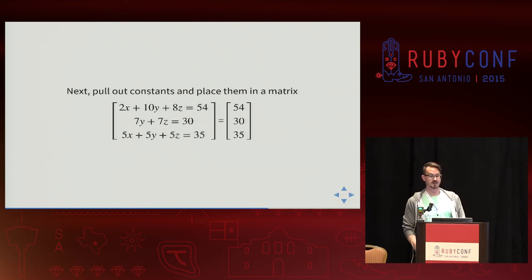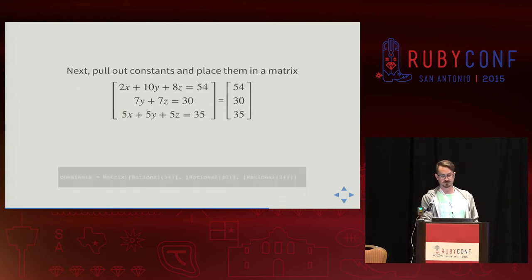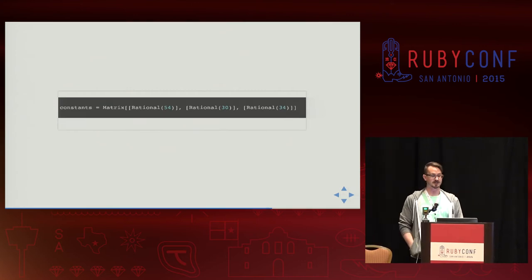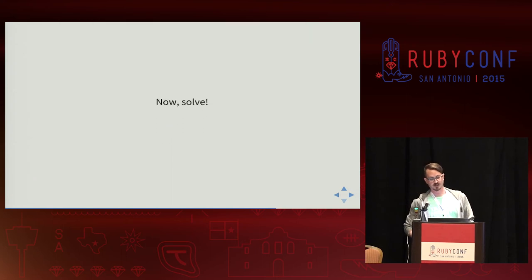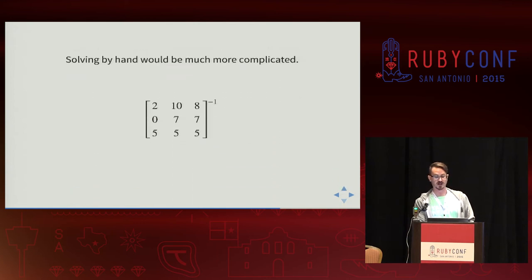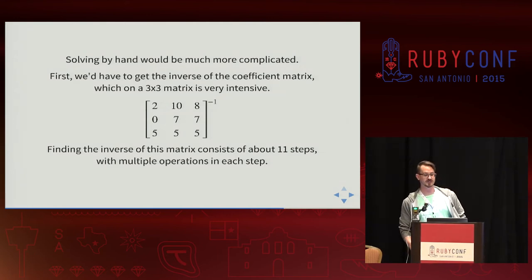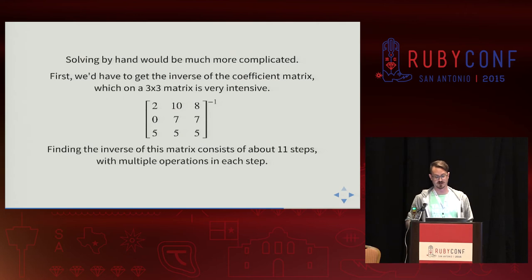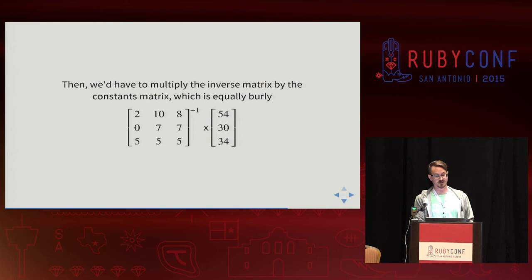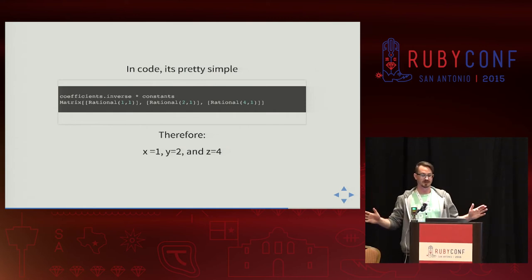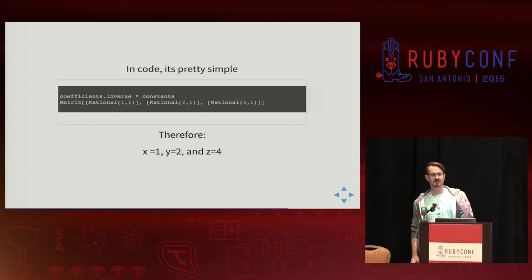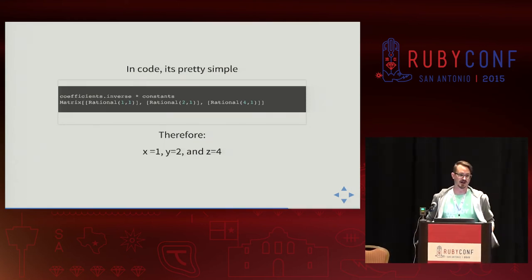Then we pull out the constants — 54, 30, and 35 — and place them into their own matrix. In code I just explicitly typecasted each one. Now to solve: thankfully computers are awesome at this tedious arithmetic. Solving by hand requires getting the inverse of that matrix — a very intensive operation with at least 11 major steps, each with three or four sub-steps. But then once we've derived that inverse matrix, we multiply by the constants matrix. In code this is just beautiful and simple — I tell the coefficients matrix to invert itself, then multiply by the constants, and I have my solution.